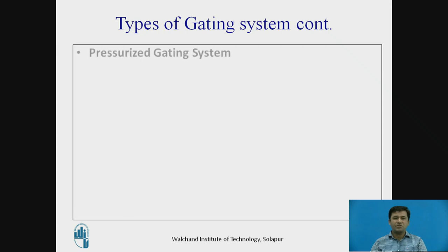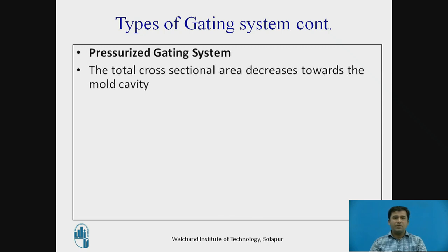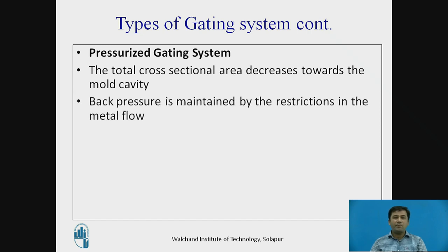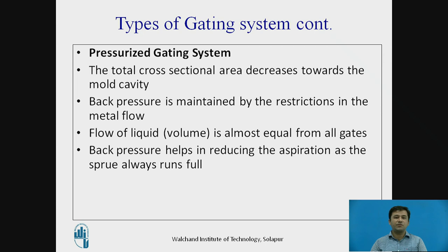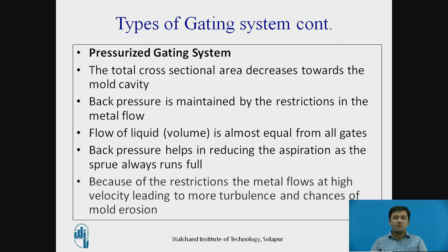First, we look at the pressurized gating system. If the total cross-section area decreases towards the mold cavity, it leads to a pressurized gating system. A pressure is created due to the decreasing cross-section. Back pressure is maintained by the restriction of metal flow, and the flow of liquid volume is almost equal from all gates. Back pressure helps in reducing aspiration, and the sprue always runs full. However, due to the restriction, metal flows at high velocity, leading to more turbulence and higher chances of mold erosion — this is a disadvantage of pressurized gating system.